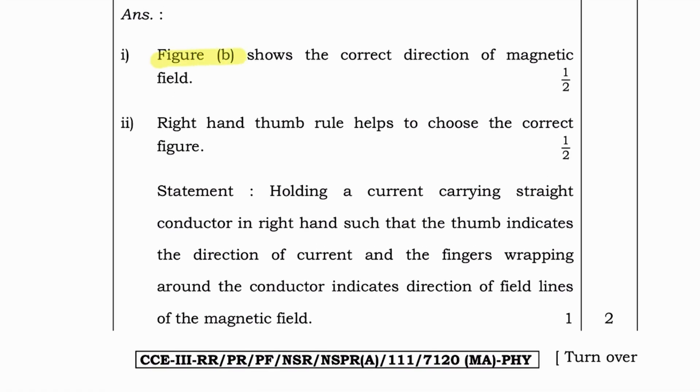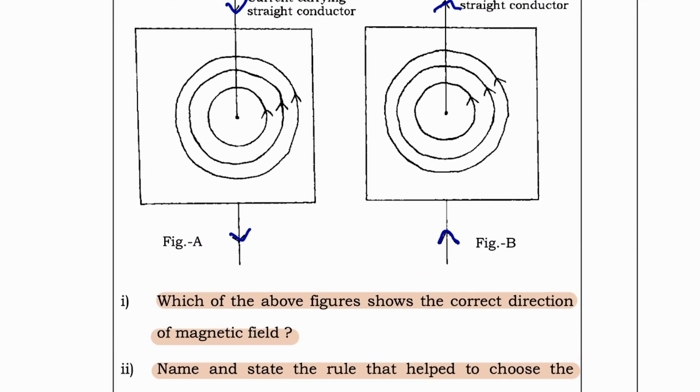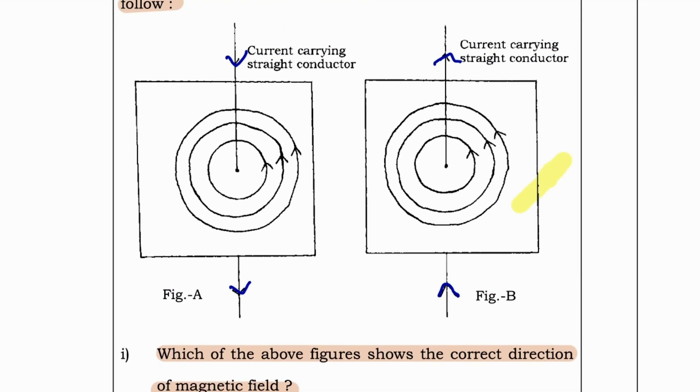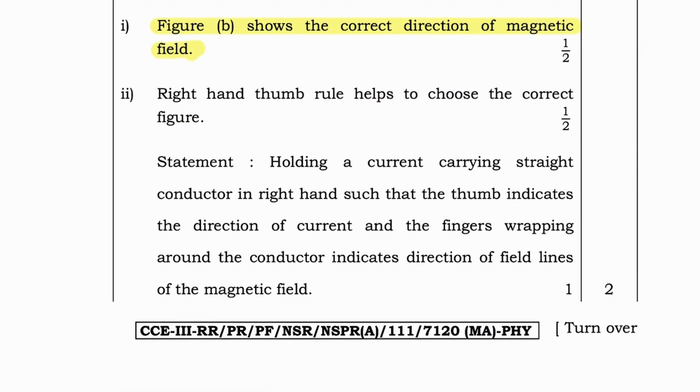Answer, figure B shows the correct direction of the magnetic field. This figure. Next, right hand thumb rule helps to choose the correct figure. Statement is, holding a current carrying state conductor in the right hand such that the thumb indicates the direction of current and the finger wrappings around the connector indicates the direction of field ends, of magnetic field.